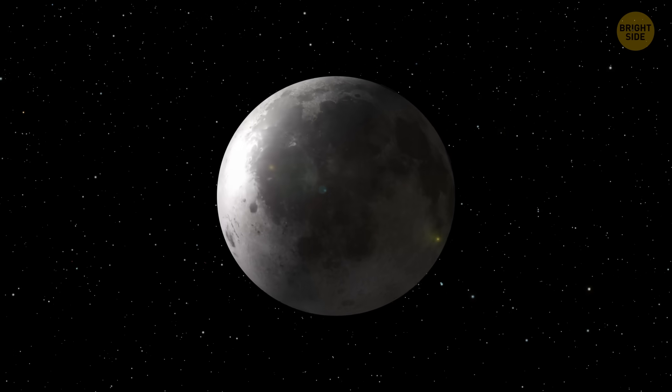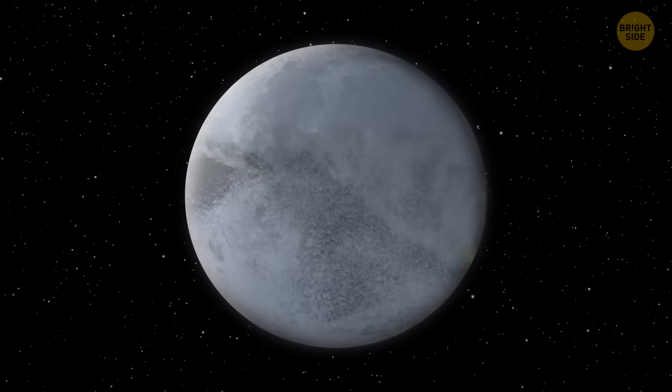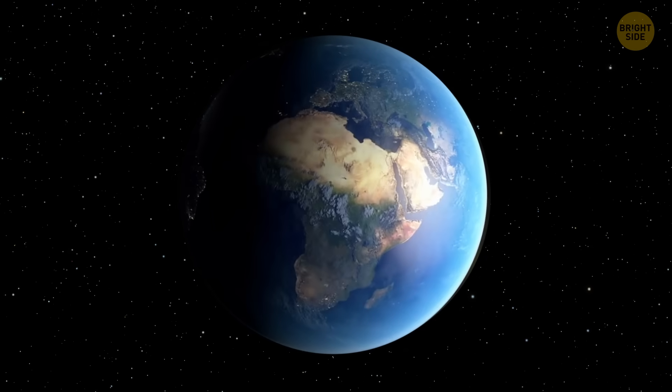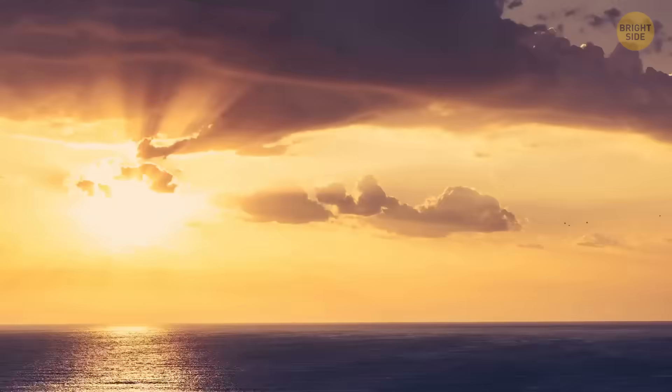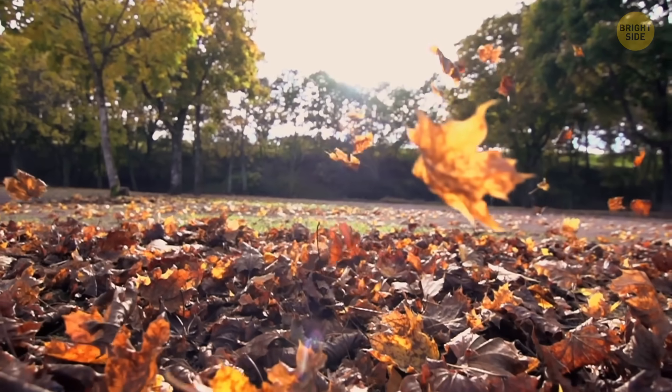Now, let's recap the superpowers of our moon. It can affect tides, slow down Earth's rotation, and even help stabilize our planet's tilt. Without the moon, our days would be shorter, our nights darker, and the seasons way more chaotic.